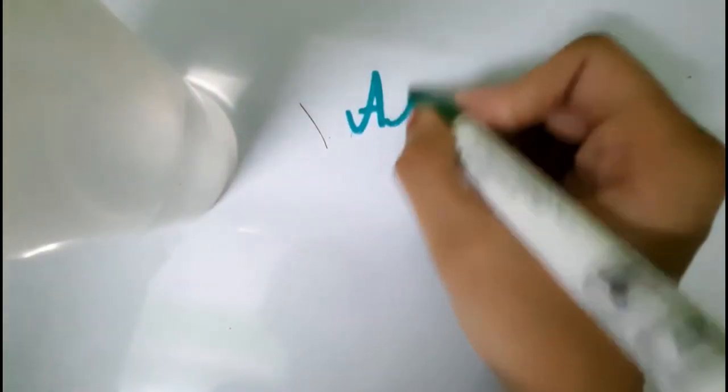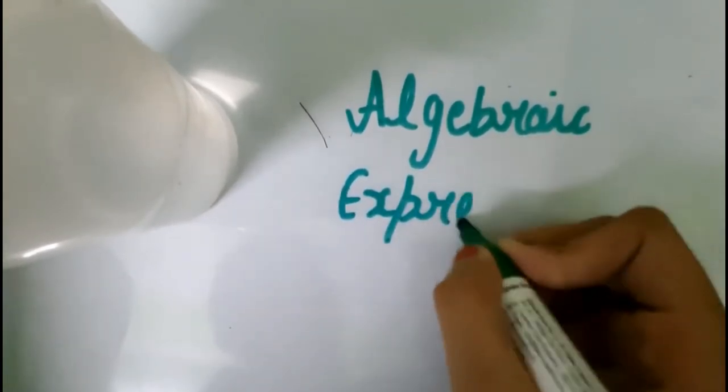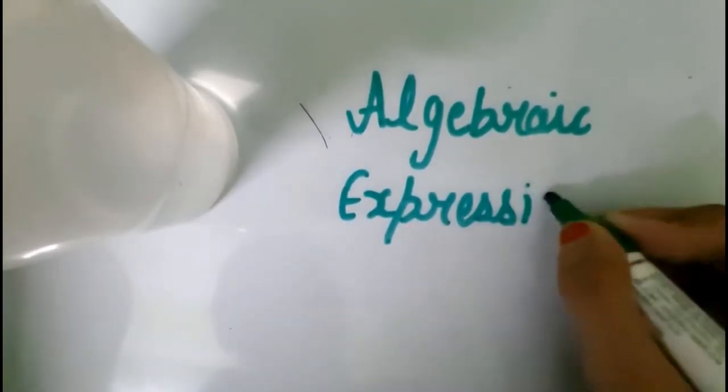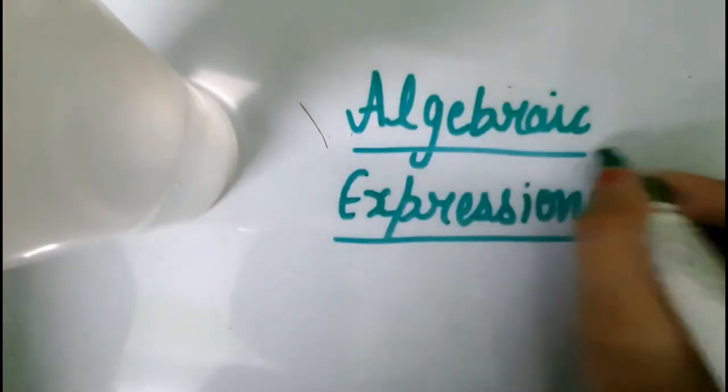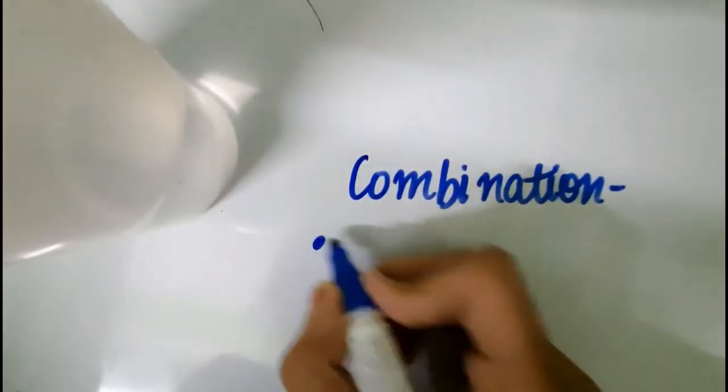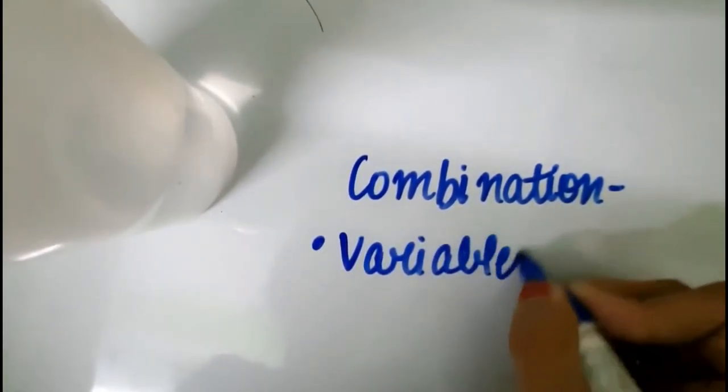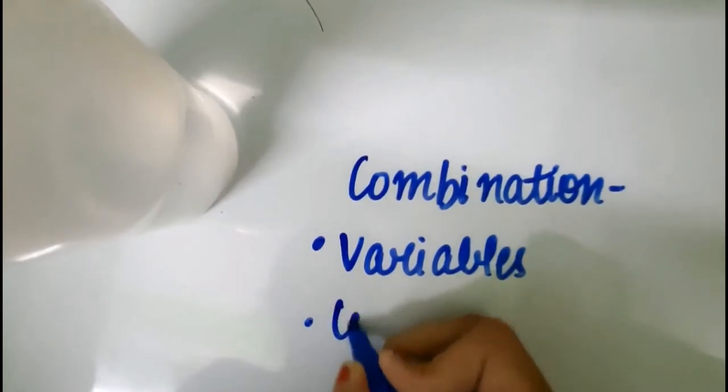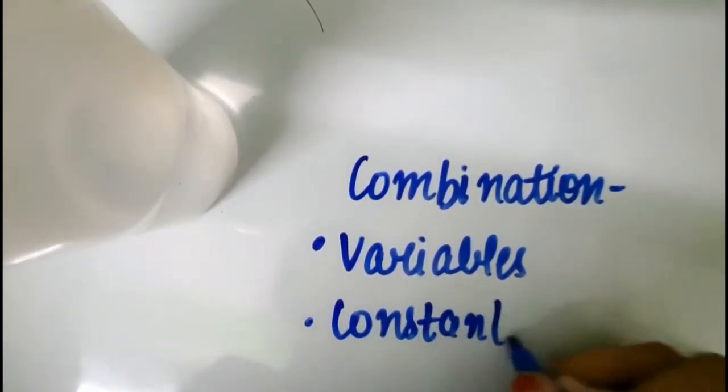First, let's get started with the introduction of this chapter, which is algebraic expressions. What are these? These are the combination of two terms which are joined together by some mathematical signs. Mathematical signs you know: plus, minus, subtraction, and division. So the combination of two terms - two terms are variables and constants.